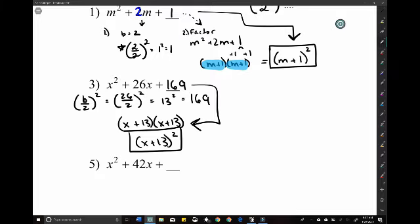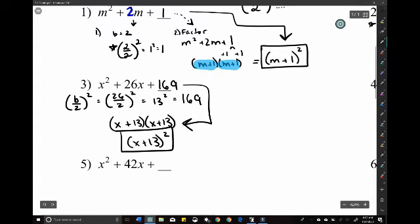Pat yourself on the back if you got that. If you're still a little confused, just keep trying to practice. B over 2 squared, and plug that in, and then rewrite. The B value, again, is what's going there.